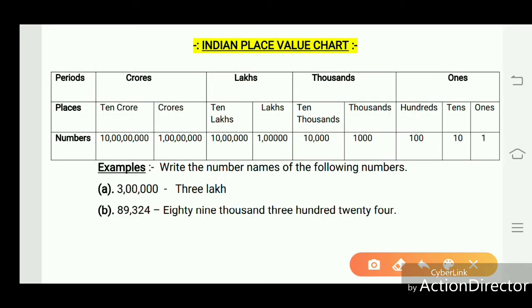Indian place value chart. This chart is divided into 4 parts: ones, thousands, lakhs, and crores. Ones is divided into 3 parts: ones, tens, and hundreds.